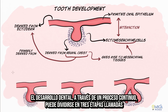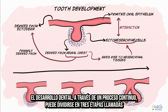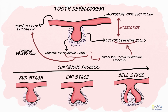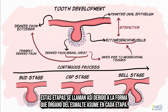Tooth development, though a continuous process, can be divided into three stages called the bud, cap, and bell stages. These stages are so named because of the shape the enamel organ assumes in each stage.